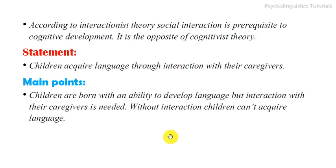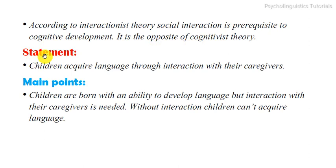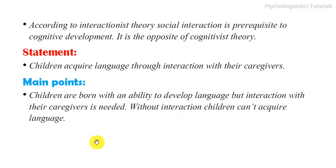According to the interactionist theory, social interaction is a prerequisite to cognitive development — it is actually the opposite of the cognitivist theory. The main statement of the interactionist theory is that children acquire language through interaction with their caregivers. Children are born with an ability to develop language, but interaction with their caregivers is needed.